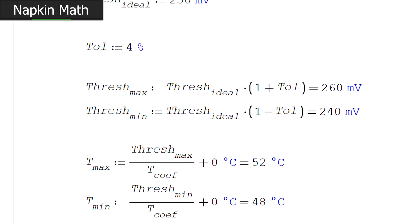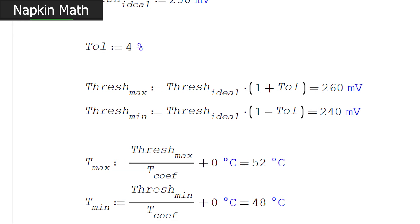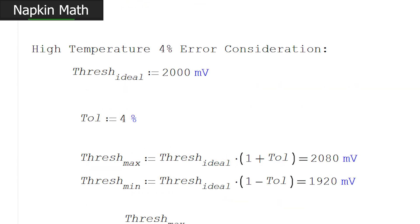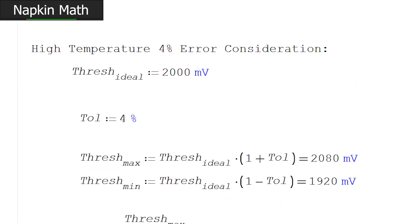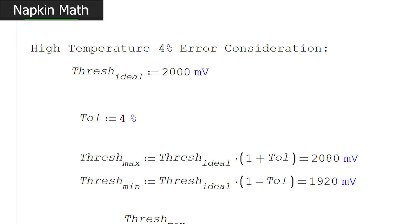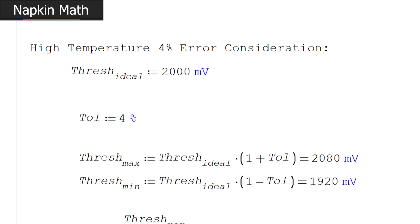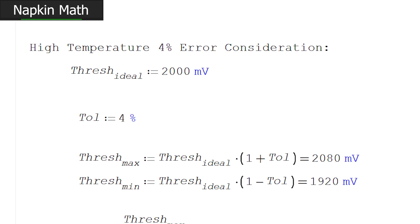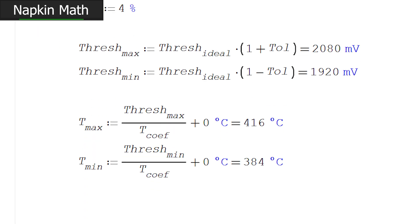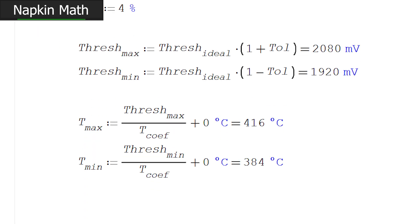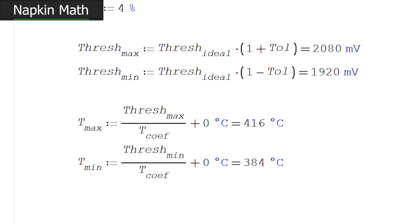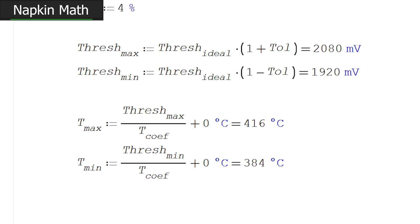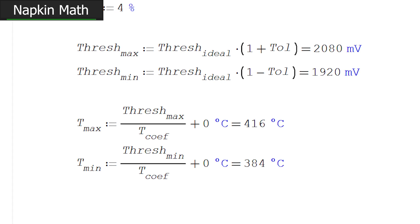However, we're not only doing business down there. We're also doing business above 200 degrees C, well, 400 C, actually. At 400 degrees, or a threshold level of 2 volts, our threshold could be as high as 2.08 volts, which would equate to a threshold of 416 C. For this application, that doesn't feel like a problem. If we need to set the trip threshold 50 degrees C above our normal operating temperature, that seems fine. That seems okay. I'd probably do that anyway, so I think a 4% accurate reference should be sufficient.